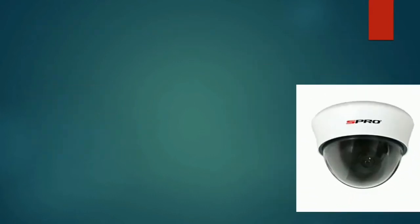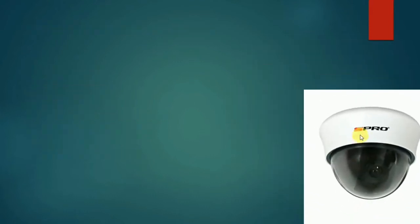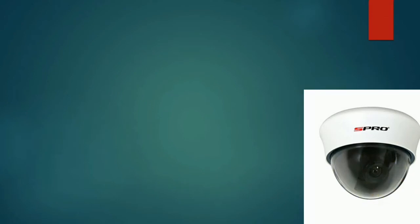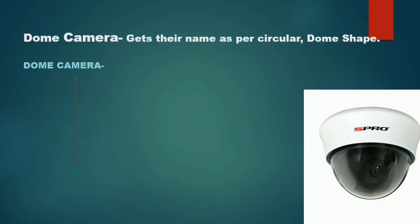The first camera we're going to be discussing is the dummy camera. This is what the dummy camera actually looks like — it has a glass shield and the camera is inside it. It is mounted mostly in cylinders and so on. This kind of camera has a dummy shape.